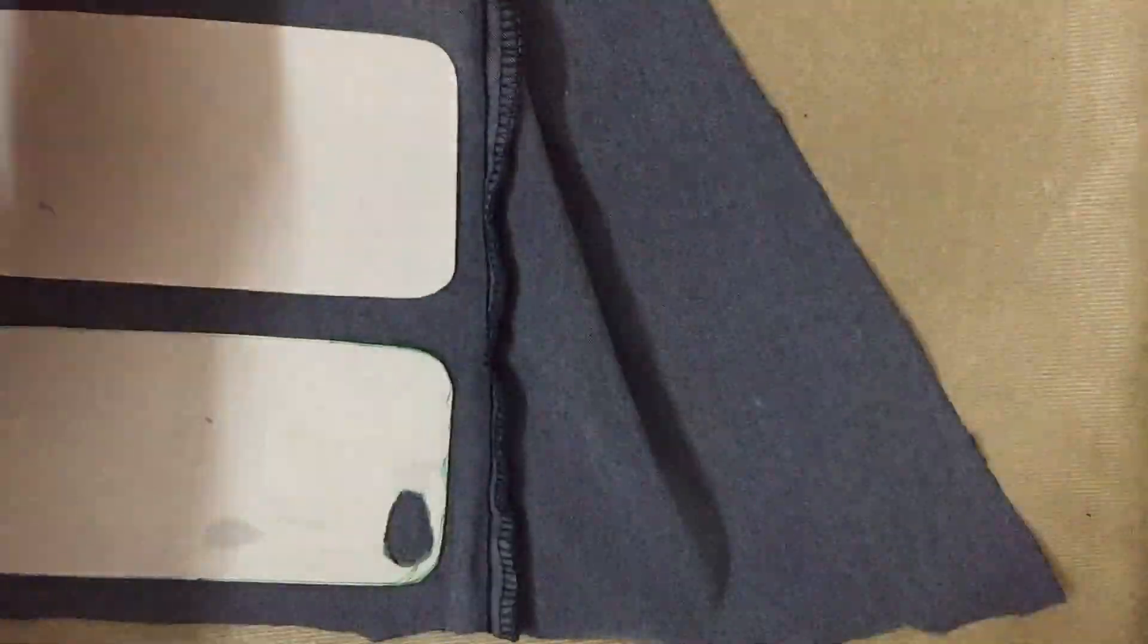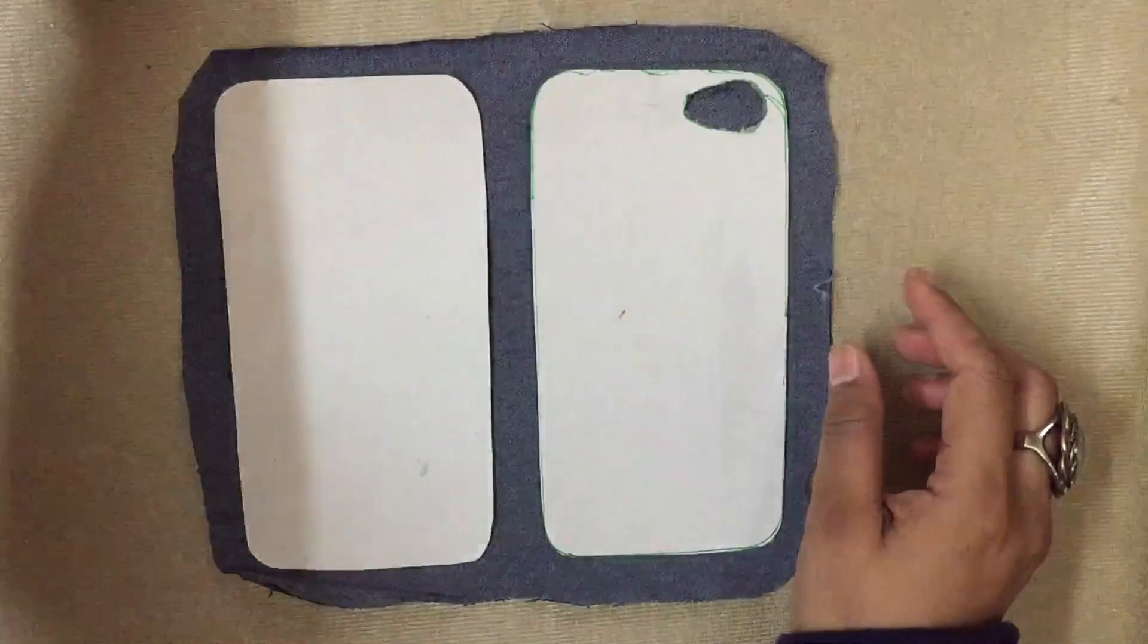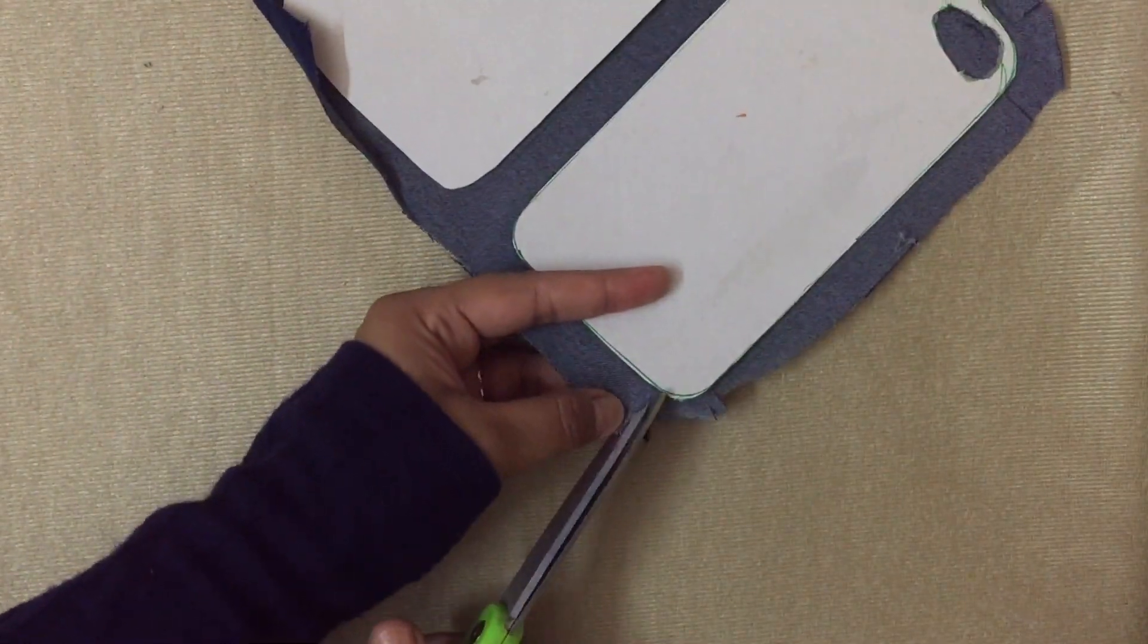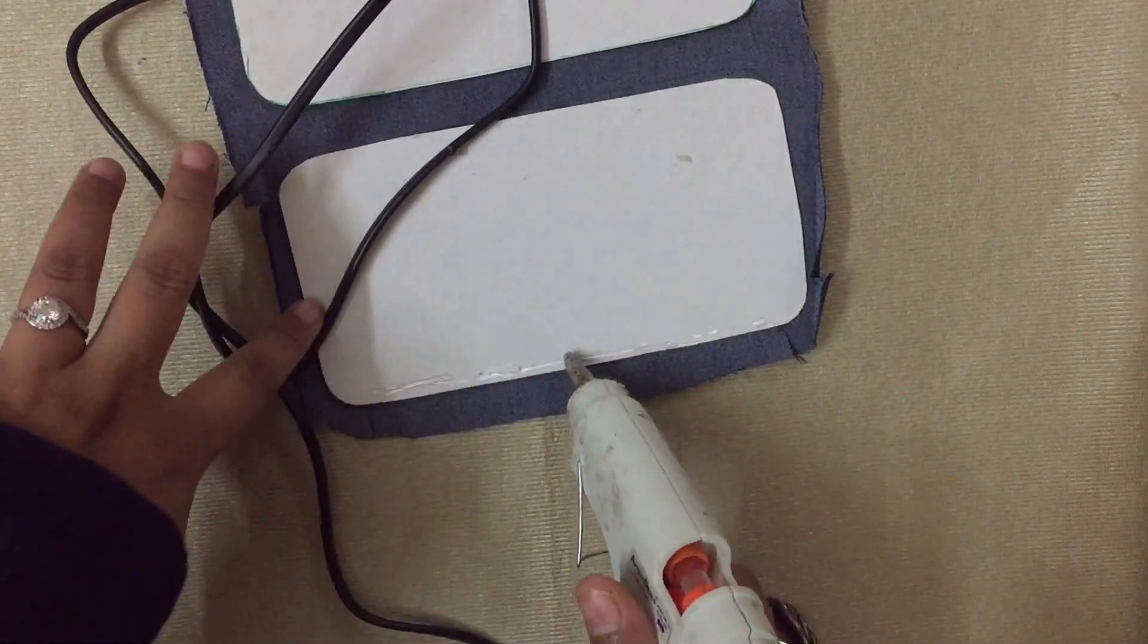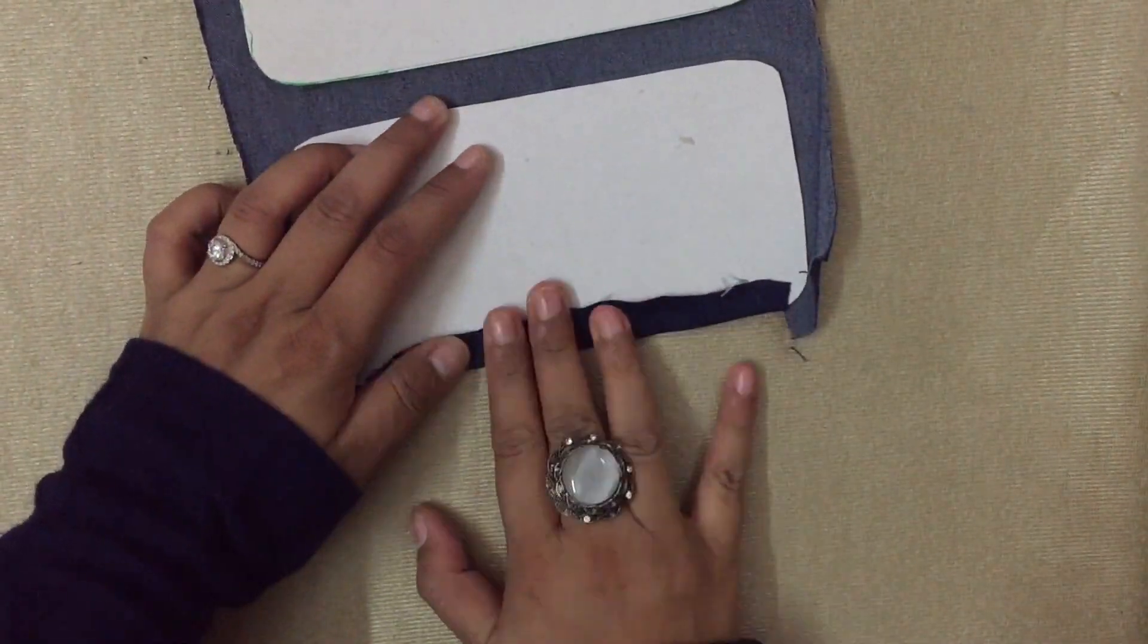Leave a seam allowance of around one centimeter on all the sides and cut off the excess fabric. Now cut off fringes in the rounded sides of the fabric so that it's easier to glue it over. Glue over the excess fabric to the cardboard with a glue gun like so.